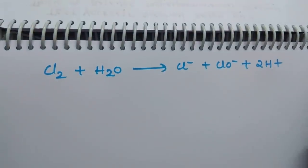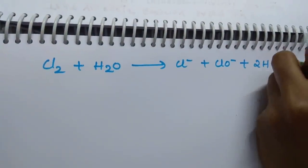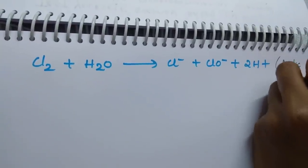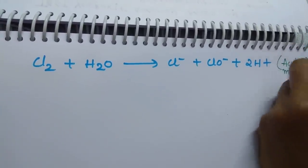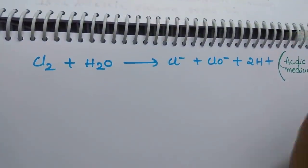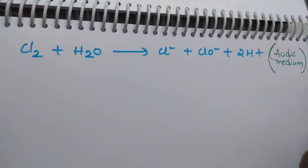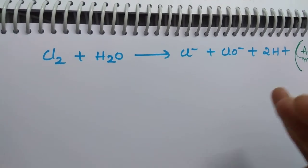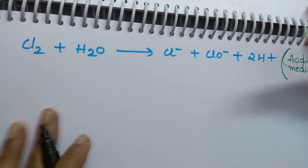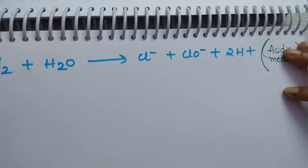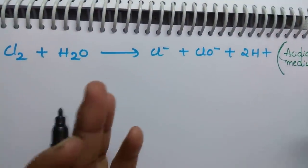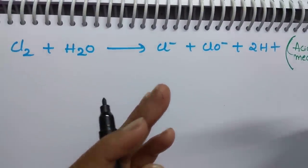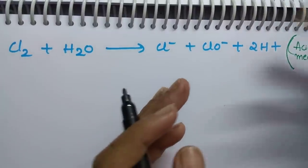This balanced equation — Cl₂ plus H₂O gives Cl⁻ plus ClO⁻ plus 2H⁺ — is in acidic medium. Now let's convert this into basic medium. It is always better to first balance in acidic medium using the same steps, because it avoids confusion about how many OH⁻ to add.